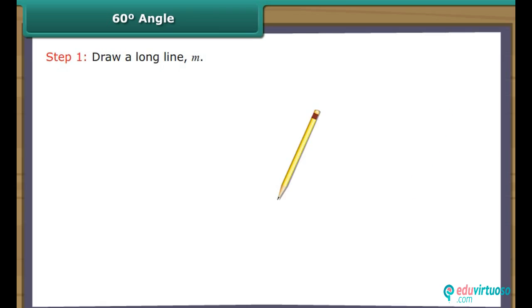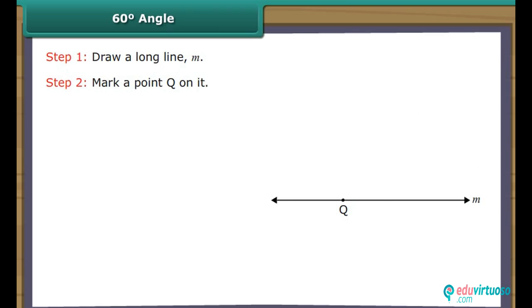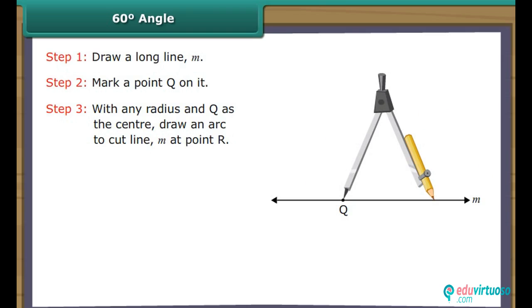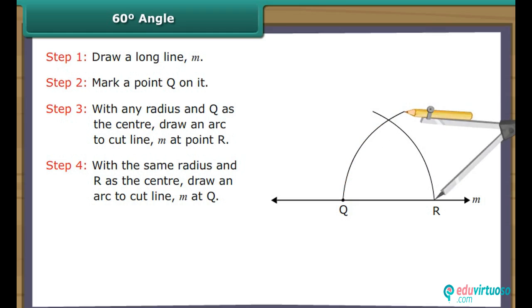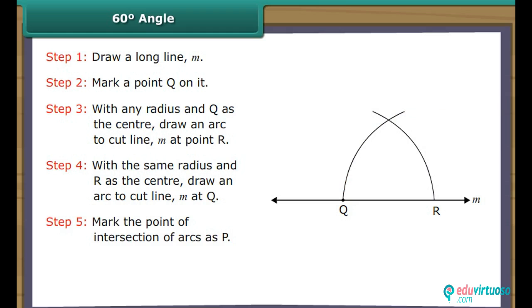Construction of 60 degree angle. Draw a long line M and mark a point Q on it. With any radius and Q as the centre, draw an arc to cut line M at point R. With the same radius and R as the centre, draw an arc to cut the first arc. Mark the point of intersection as P. Join P to Q. Angle PQR is formed, which measures 60 degrees.